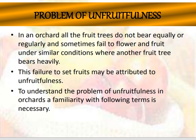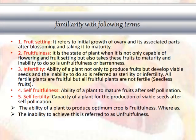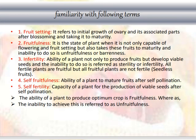In an orchard, all the fruit trees do not bear equally or regularly and sometimes fail to flower and fruit under similar conditions where another fruit tree bears heavily. This failure to set fruits may be attributed to unfruitfulness. To understand the problem of unfruitfulness in the orchard, familiarity with the following terms is necessary. Fruit setting refers to the initial growth of the ovary and its associated parts after blooming and taking it to maturity.